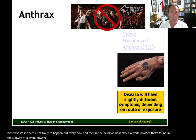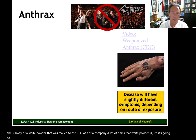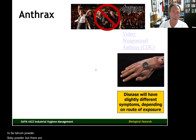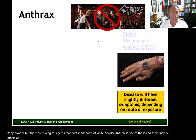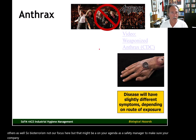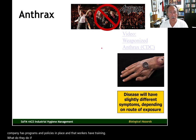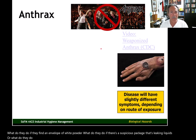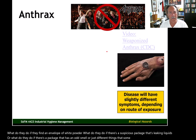That brings up the subject of bioterrorism and bioterrorism preparedness in our workplaces. Every now and then in the news we hear about a white powder found in the subway or mailed to the CEO of a company. A lot of times that white powder is going to be talcum powder or baby powder, but there are biological agents that exist in the form of white powder — anthrax is one of those.